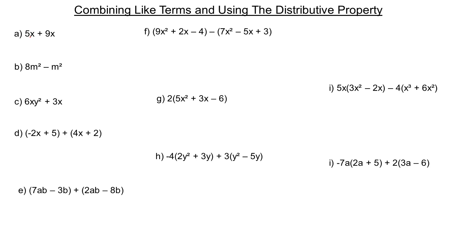In A, we have 5x plus 9x. Like terms are ones that have the same variable and the same exponent. When I say x, it means x to the first, so those have exponents of 1. So 5x plus 9x is just like having 5 of something and 9 of the same kind of thing. If we add 5 and 9, we get 14, so this would add to 14x.